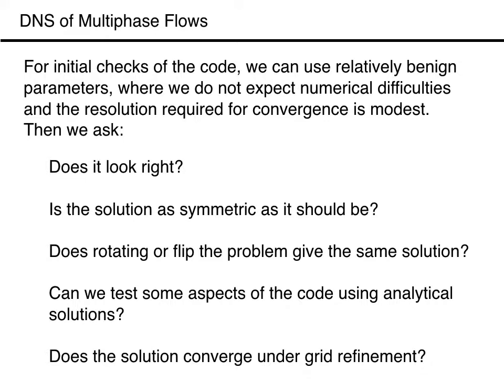We are limited to a relatively modest number of things to check. First, does the solution look correct? If it does not, the probability of an error is far higher than that we have discovered an unexpected behavior. Secondly, is the solution as symmetric as we expect it to be? What about if we let gravity point in the opposite direction, or to the left or right — does the solution still look the same? Finally, does the solution converge under grid refinement, where we change both the spatial and the temporal resolution? If we are using benign parameters, it should converge quickly.